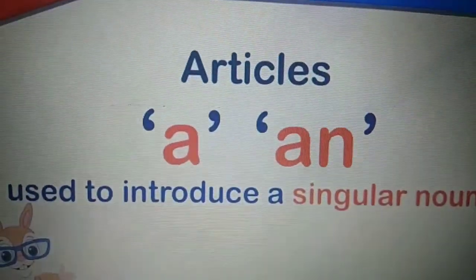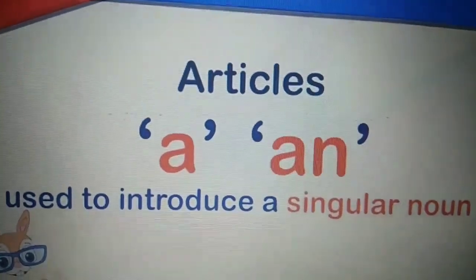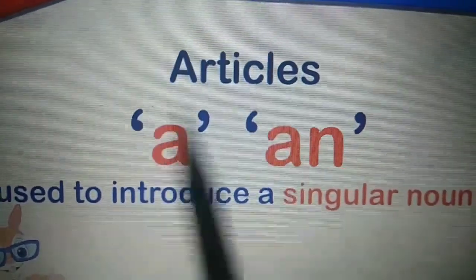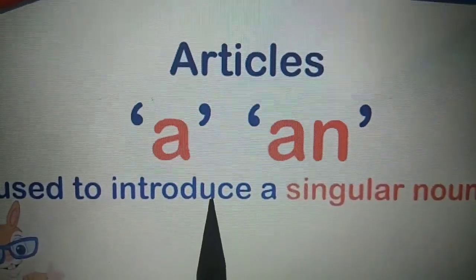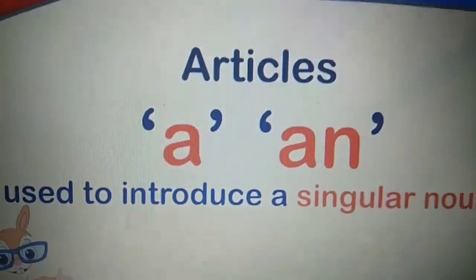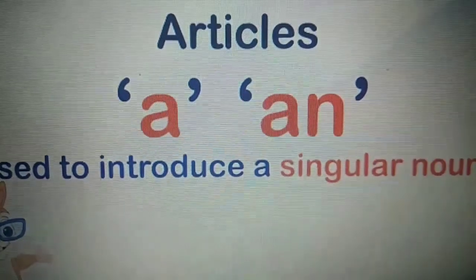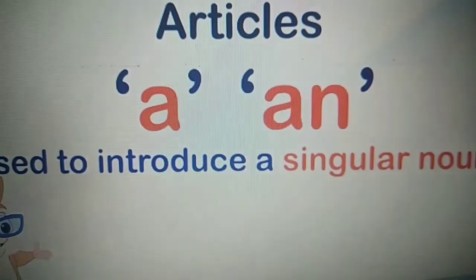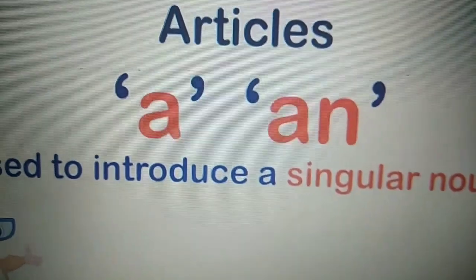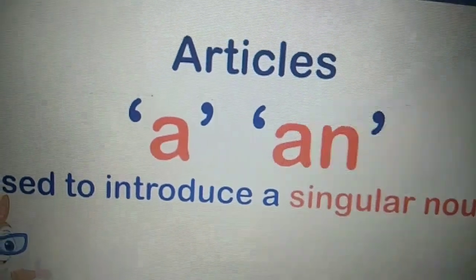Now here one more thing I would like to tell you about articles A and AN. A and AN are both used to introduce a singular noun. Kisih ek singular noun ke pehle hi hum A ya AN ka use karenge. Like you have seen: a cow, an umbrella, a pearl, an egg. Here cow is one, umbrella is one. So when we talk about a singular noun, then we use article A or AN.